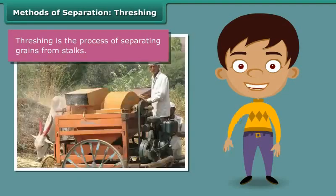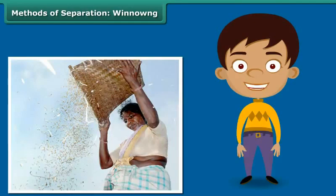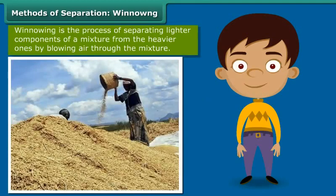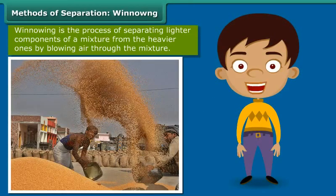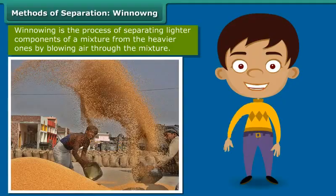Bullocks, oxen and machines known as threshers are also used for this purpose. During your numerous train trips down the countryside, you would have noticed women standing at a height, shaking a basket held over their heads continuously. They are separating the grain from the husk by simply allowing the wind to blow away the husk and other lighter impurities. The heavier grain falls down on the ground in a heap. This process of separating impurities from the grain by allowing a current of air to blow away the lighter impurities is known as winnowing.